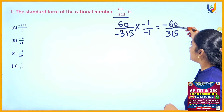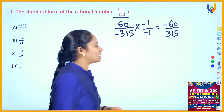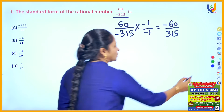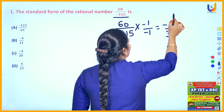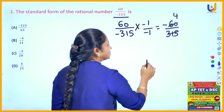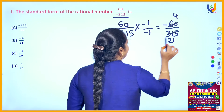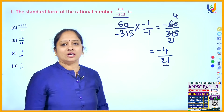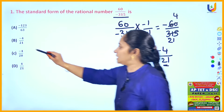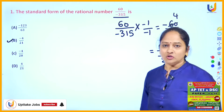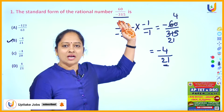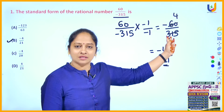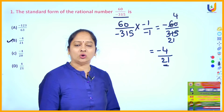The numbers are 60 and 315. By a regular check, 15 is the HCF of these two numbers. Using the 15 table: 15 fours are 60, 15 twos are 30, and 15 ones are 15. So finally the rational number is turned into simplest form, that is minus 4 by 21 — option B is the answer.